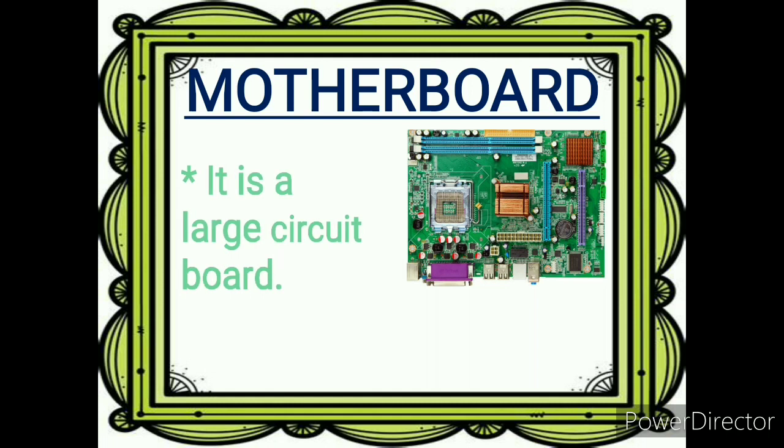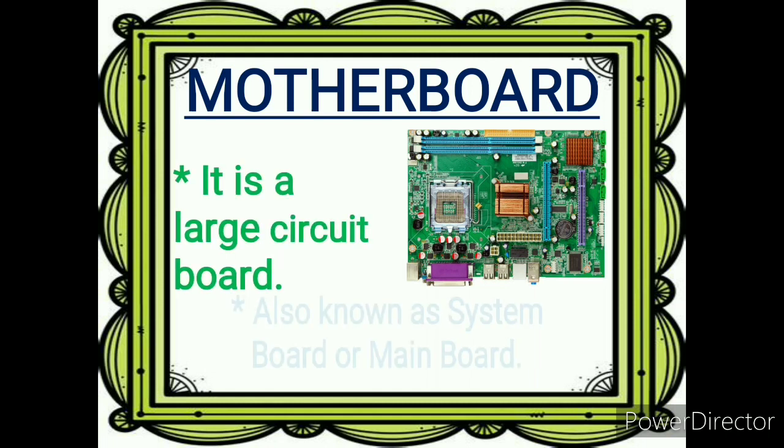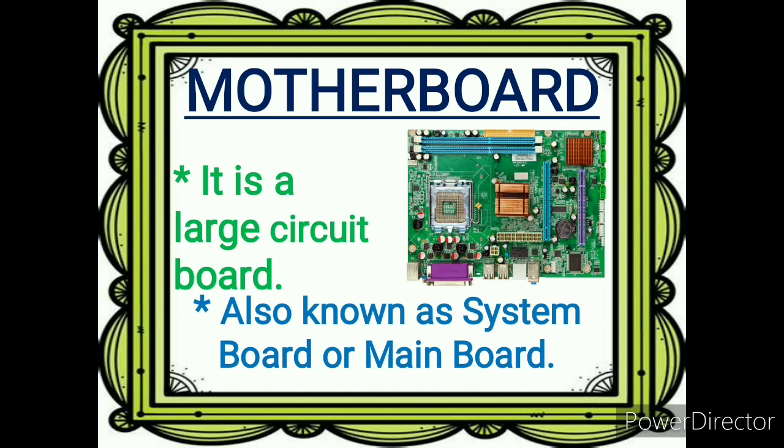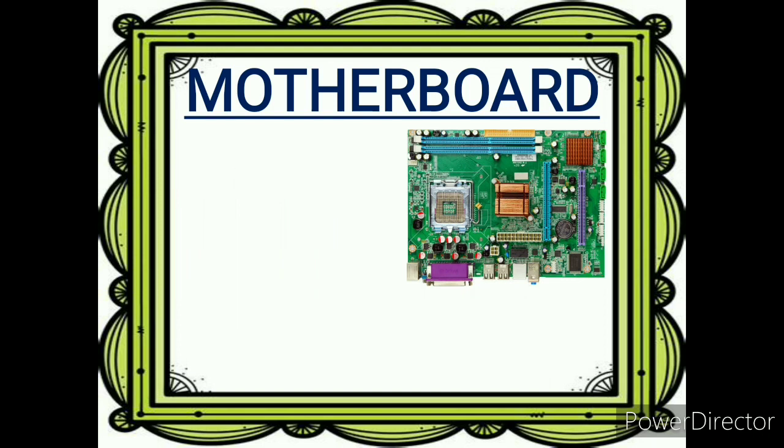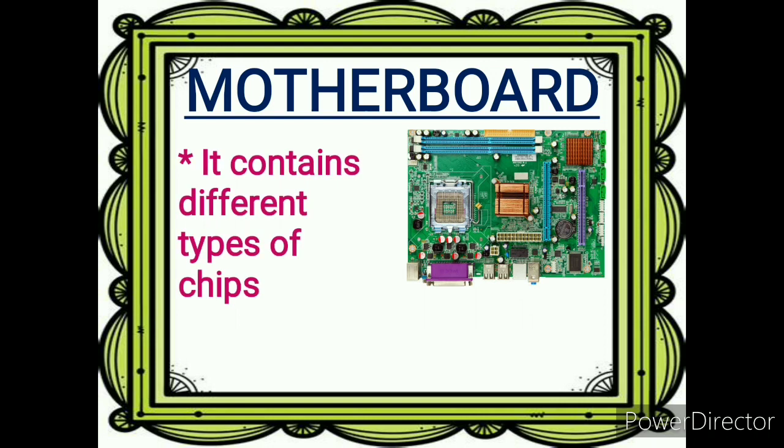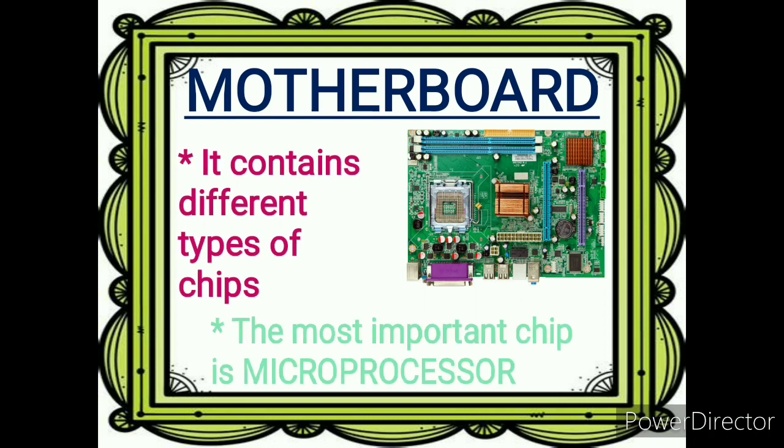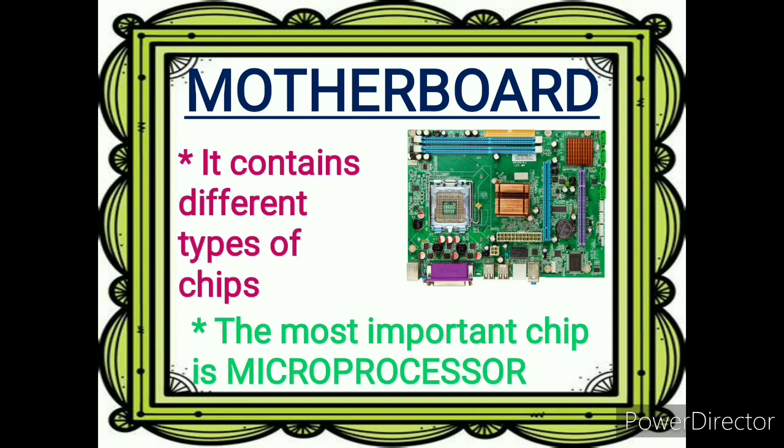Let's start with the motherboard. It is a large circuit board in the system unit and is known as the system board or main board. It contains different types of chips, and the most important chip is the microprocessor chip.